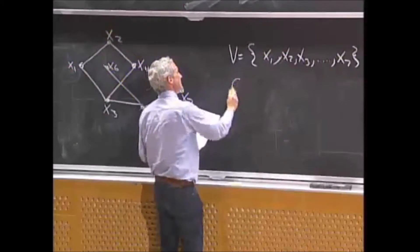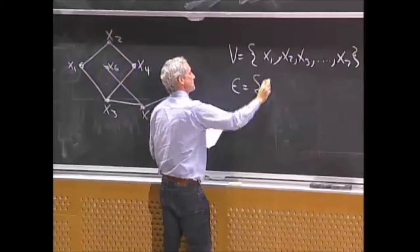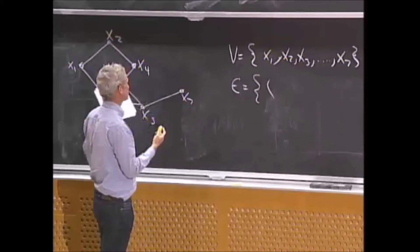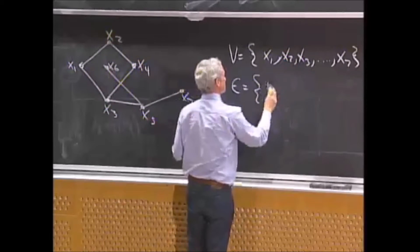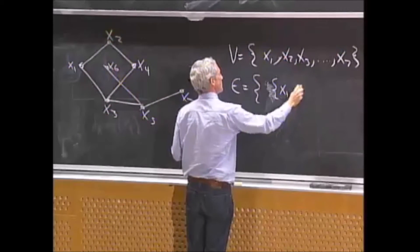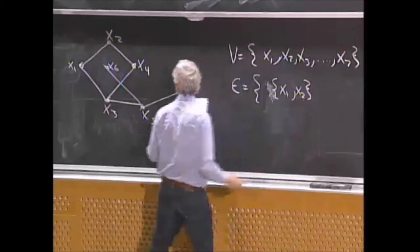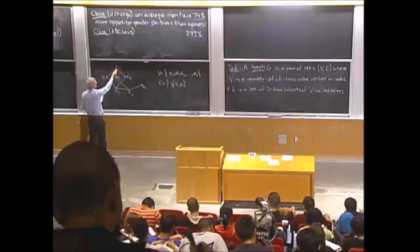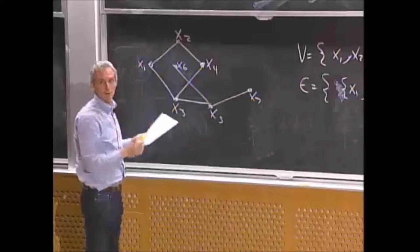And E, the set of edges, is pairs, unordered pairs of vertices. So for example, x1, x2 is an edge. And it's the same as the set x2, x1. Doesn't matter the order here.